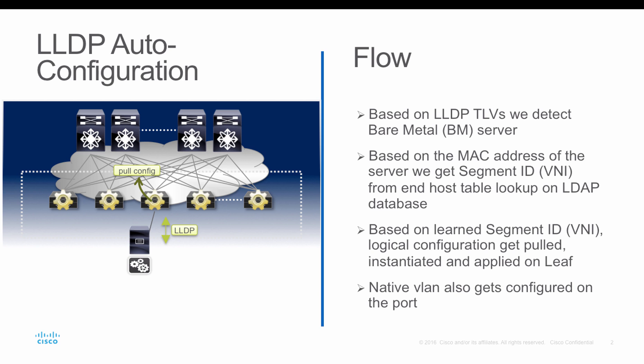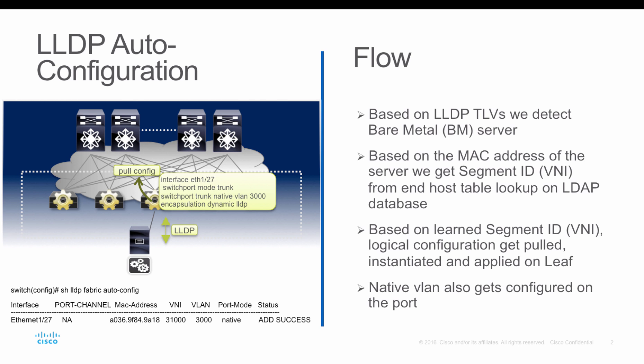Using this information we query the profile database and pull the configuration template onto the switch to bring up the server dynamically onto the network. The added advantage of LLDP auto configuration is that we not only provision the tenant, but also configure the port with the native VLAN by picking a free VLAN from a dynamic pool. The administrator no longer needs to go to each switch and enable VLANs on a per-port basis — this is done dynamically using LLDP auto configuration.